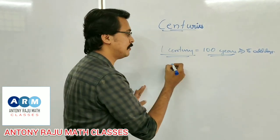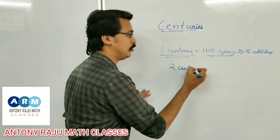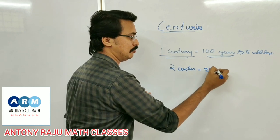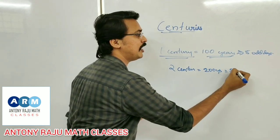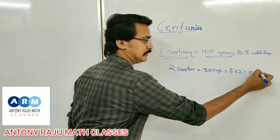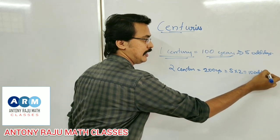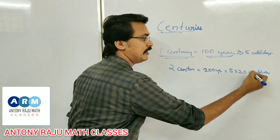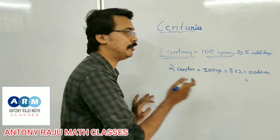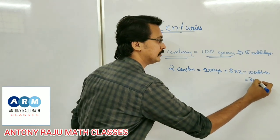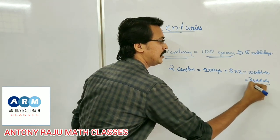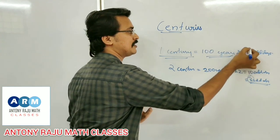In 200 years, the odd days will be 5 into 2, which is 10 odd days. Then 10 divided by 7 gives a remainder of 3. So in 200 years, there will be 3 odd days.